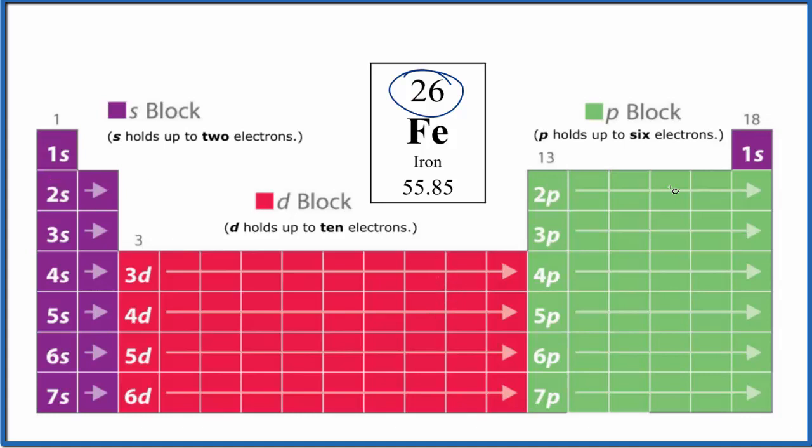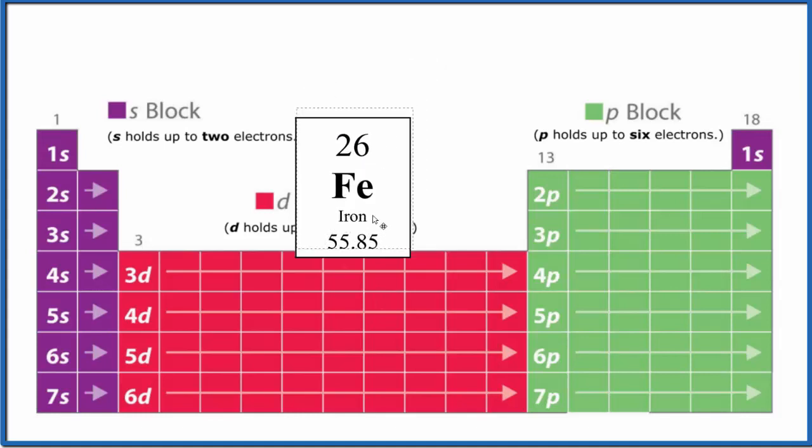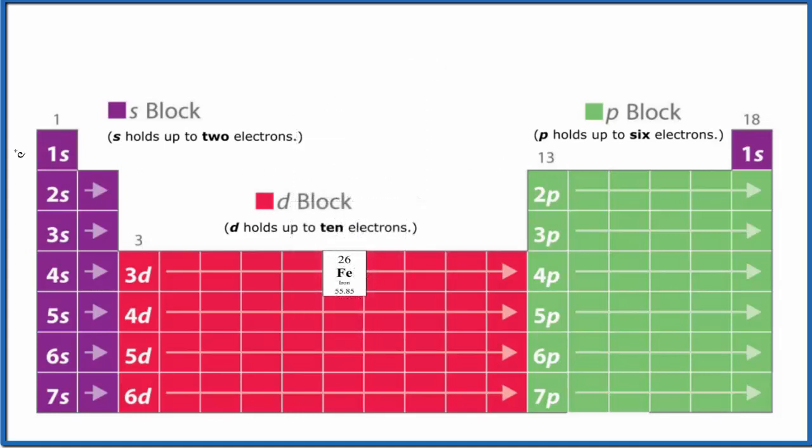Let's write the configuration using the pattern on the periodic table. Iron is right here. If we follow this, we start with 1s, the first energy level: 1s¹, 1s².